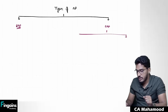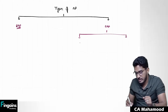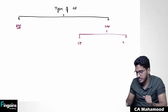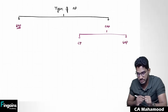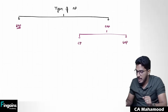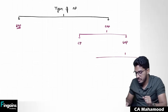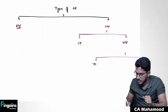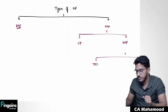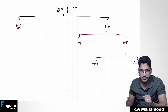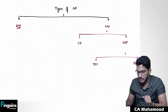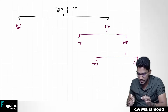Further audit procedures can be divided into compliance procedures and substantive audit procedures. In substantive audit procedures, there are also two more categories: test of details and analytical procedures.